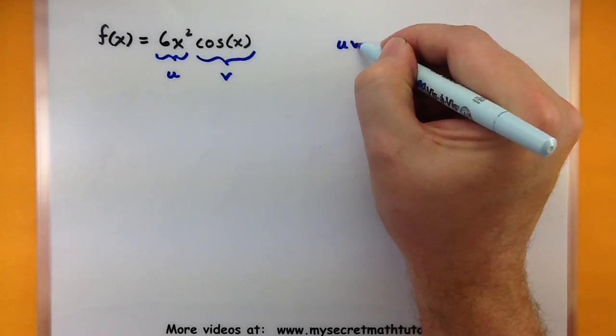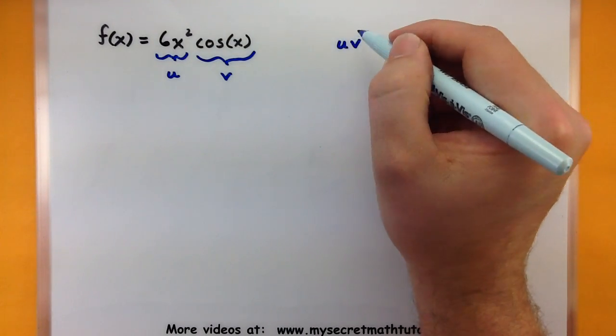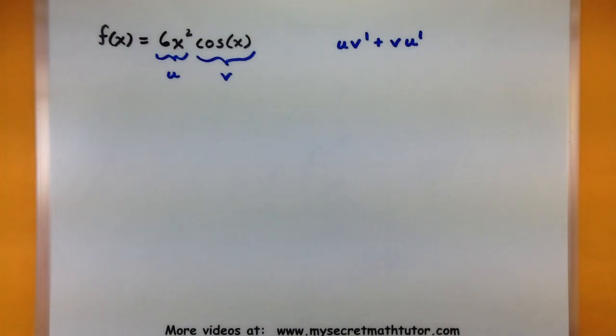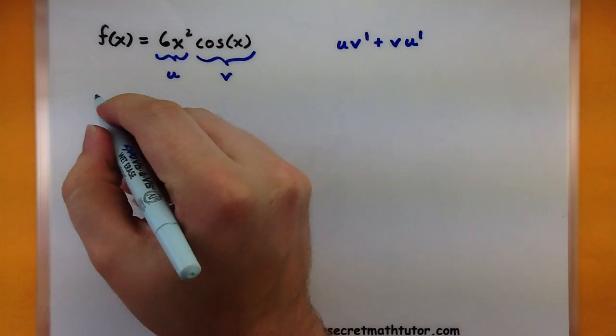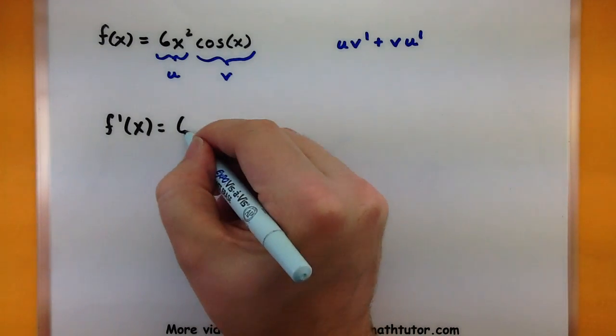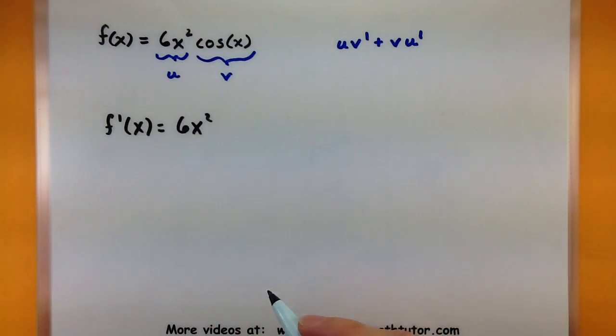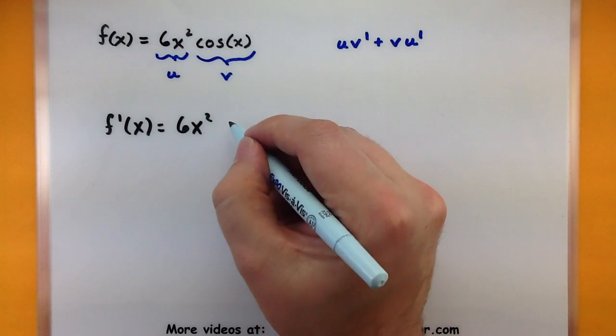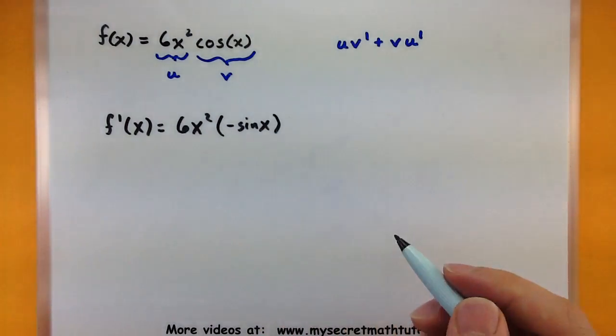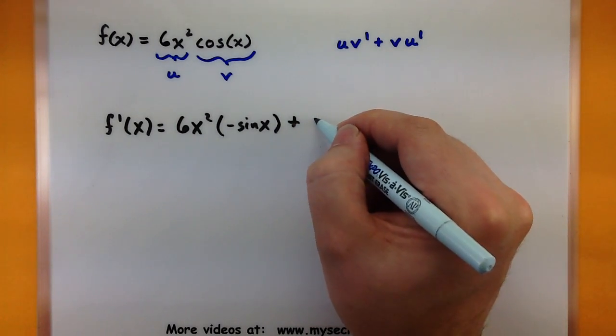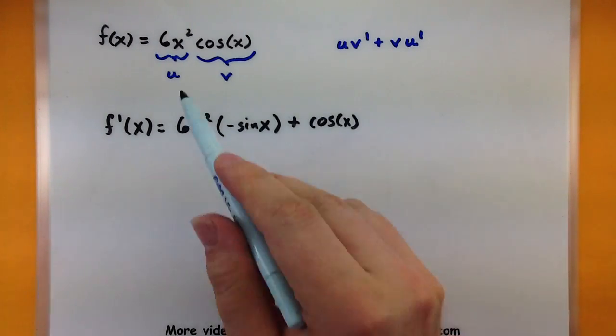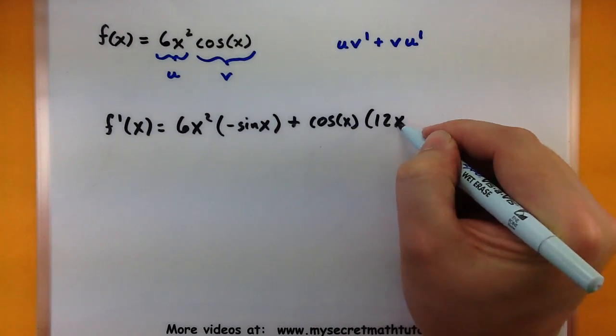So I'll multiply these using my product rule. So I'll look at my first function the derivative of the second, second function derivative of the first. Alright so f prime of x. Well my first function is 6x squared. And the derivative of the second function is negative sine. Okay that looks good.